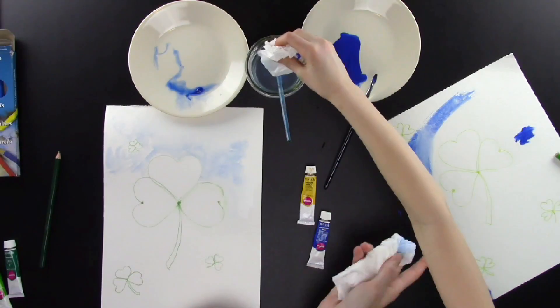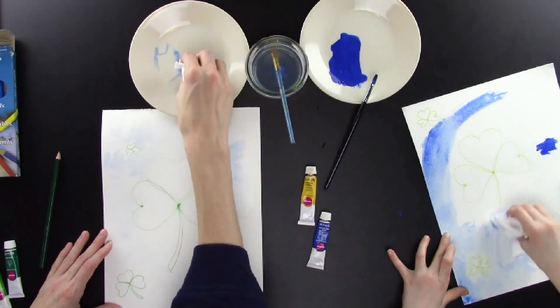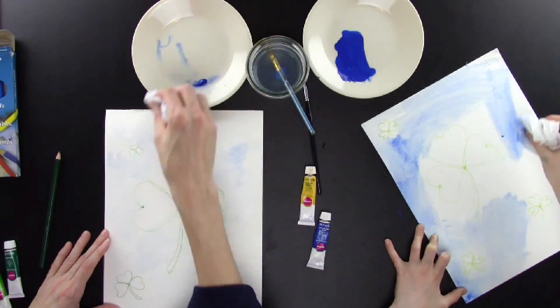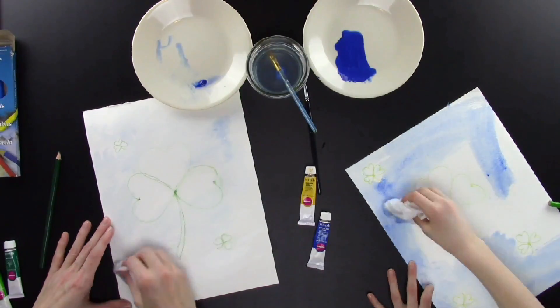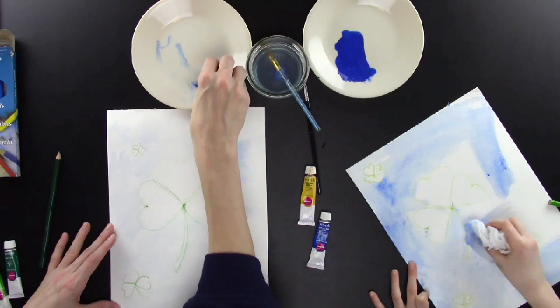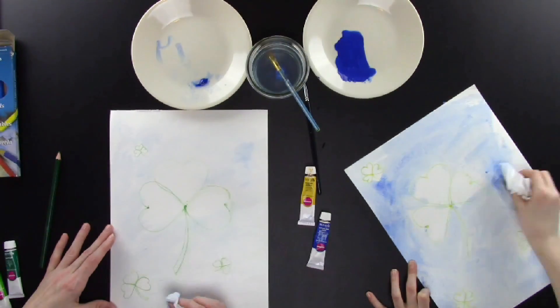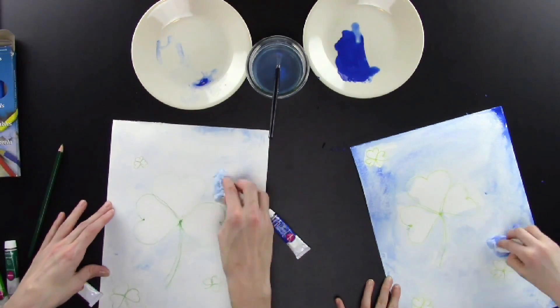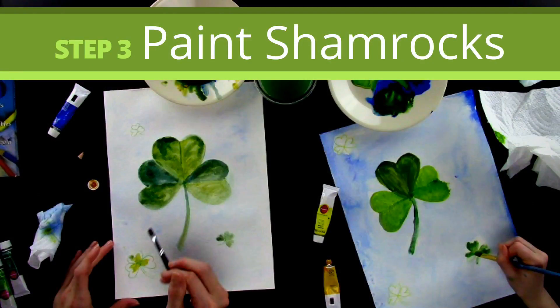If you want it to be darker, that's fine, but we want it to be a little bit lighter so we're just going to spread the paint around. The more you spread it, the lighter it gets. Don't worry about painting a little bit over your shamrock. It won't matter in the end. I like your idea, Katie, of making the edges of your paper darker.